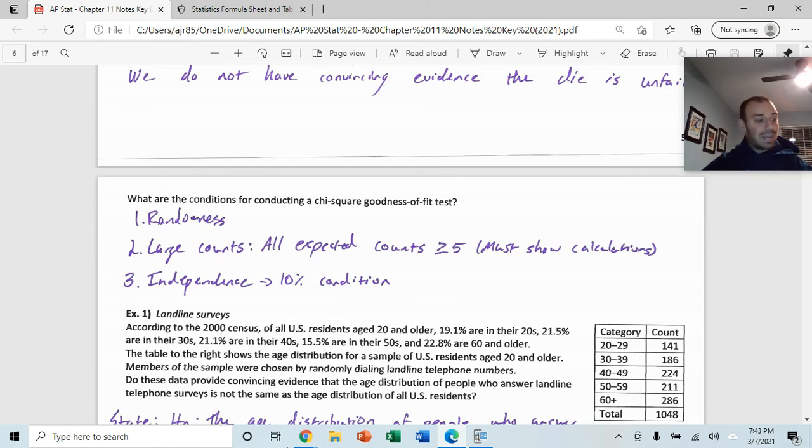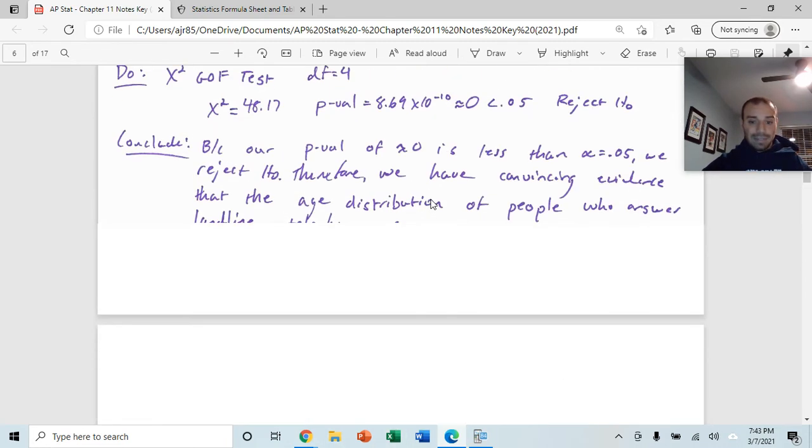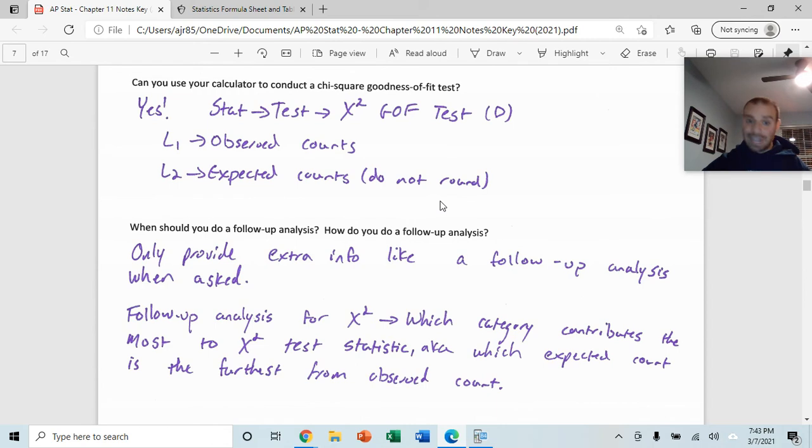Last thing for this section of the notes is can you use the calculator like I talked about? Yes, absolutely. I highly encourage that you use the calculator. It's STAT over to test and a chi-squared G-O-F, GOF, standing for goodness-of-fit test, which is letter D. You put your observed counts in L1, your expected counts in L2. Do not round the expected counts to whole numbers. Round them to one or two decimal places.